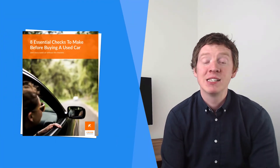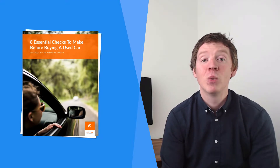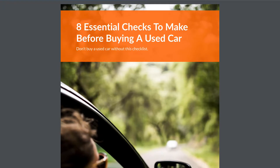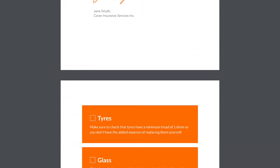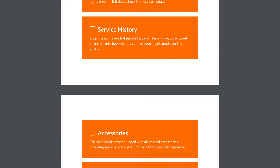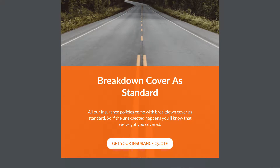In this sample checklist, it provides people with a series of tests they can carry out when assessing a used car. An insurance company might offer this lead magnet to people who are in the market for a used car. It consists of a cover page, a short introduction, two pages of practical tasks to be completed, and a call to action at the end. You can find the link to this checklist in the description below the video. Now we know what a checklist is — let's go ahead and recreate this example in Beacon.